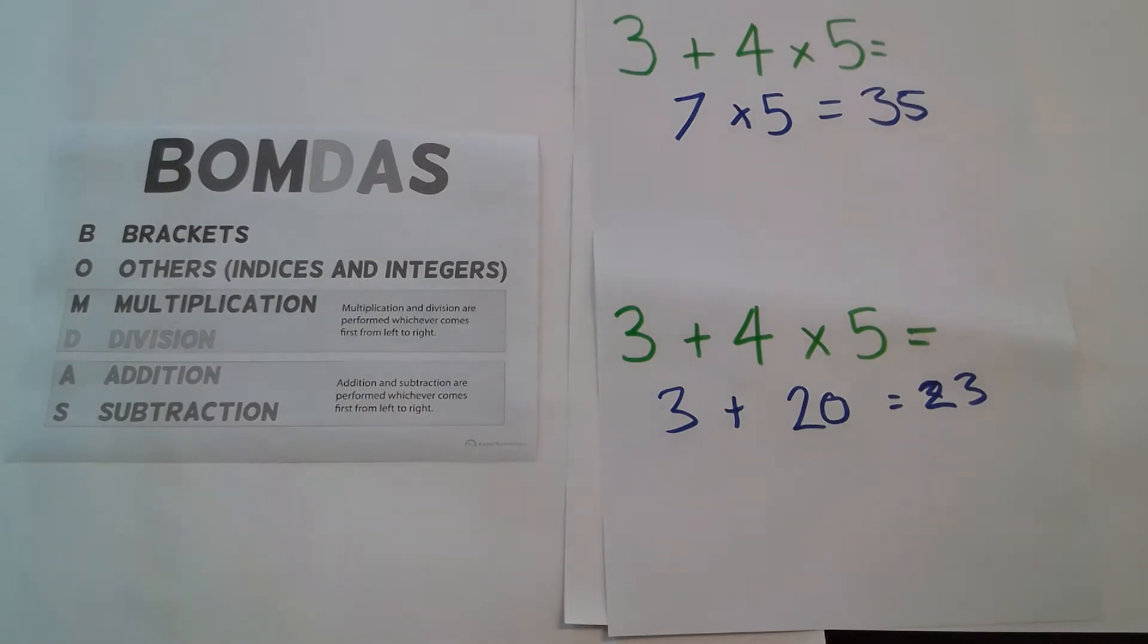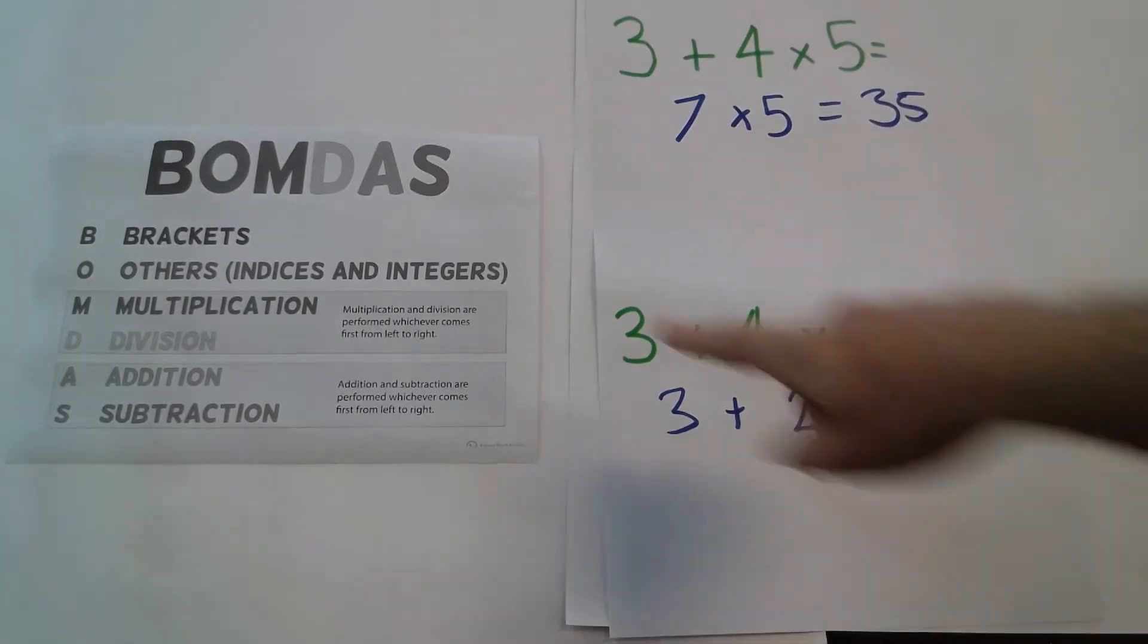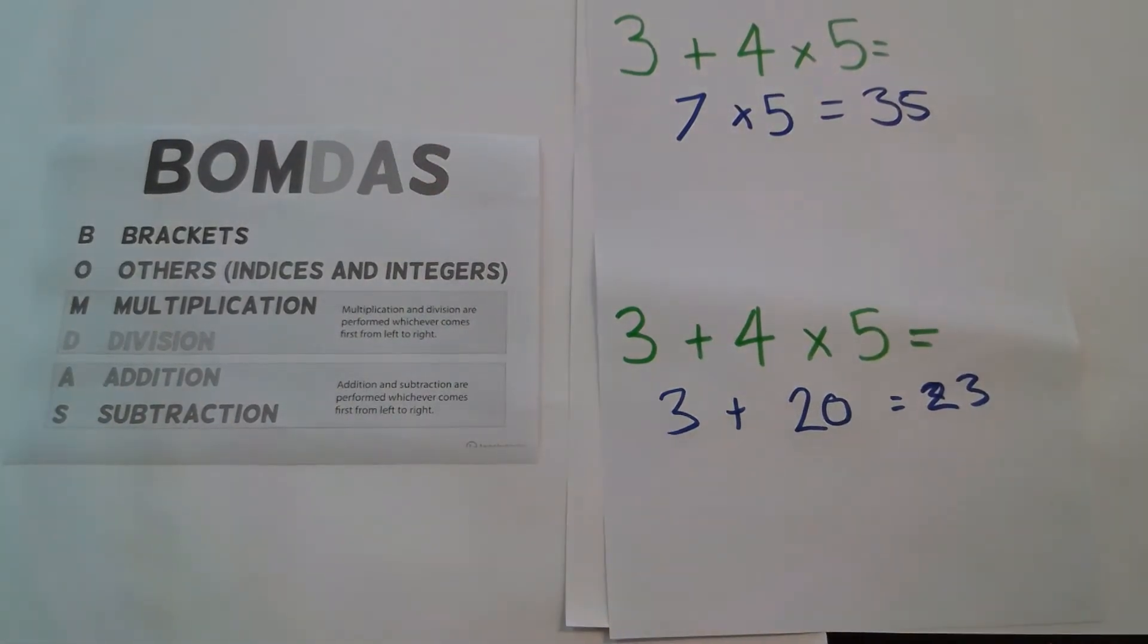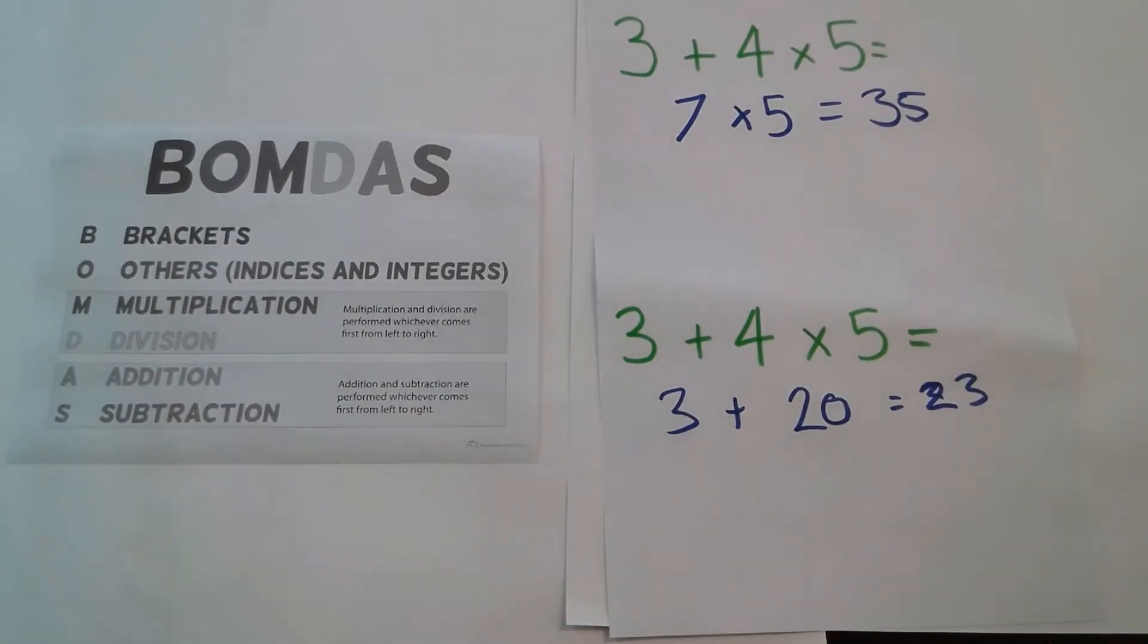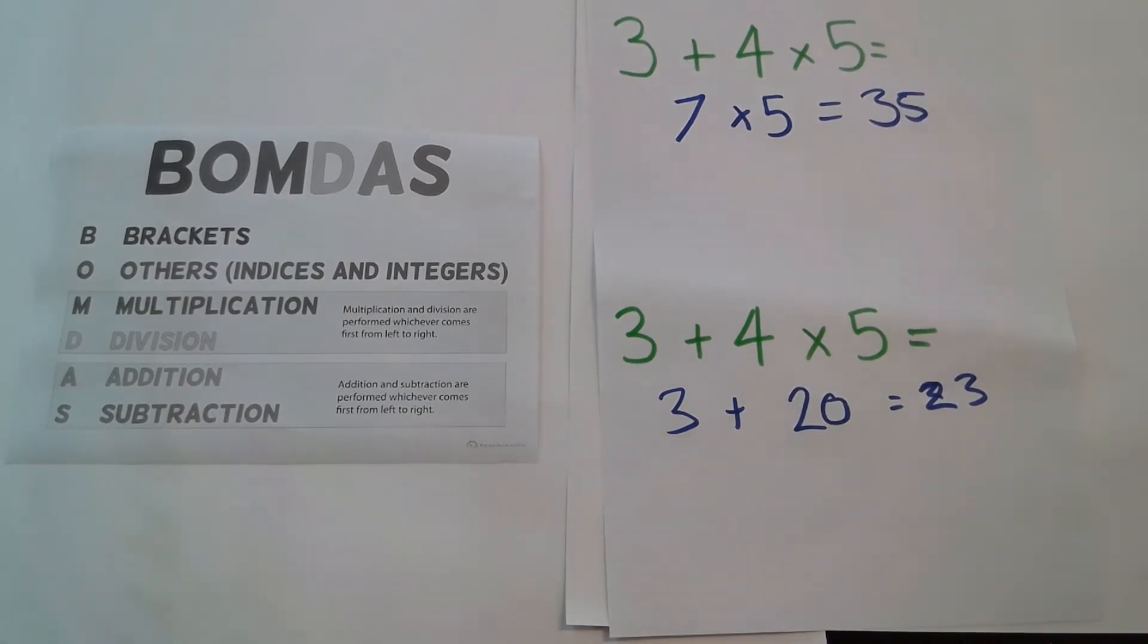Now, one of those answers is correct, and it's actually the second one, because I've followed the rules of BOMDAS. So we didn't have brackets, so then I moved on to others, which is indices or integers. We didn't have that either, so I looked at multiplication next. I did multiplication first, I did 4 times 5, which equals 20.